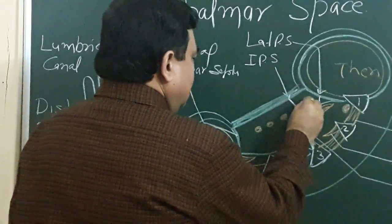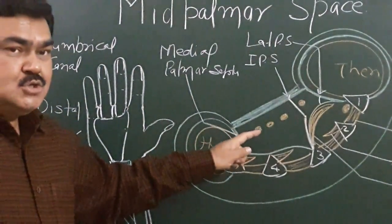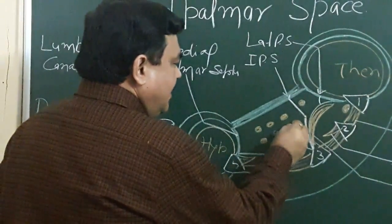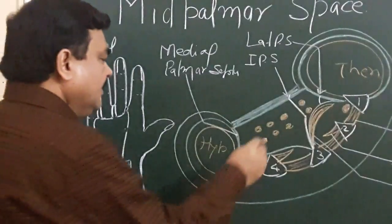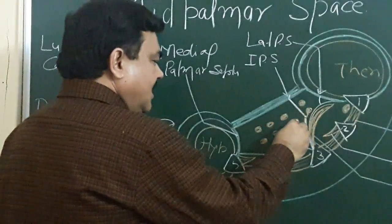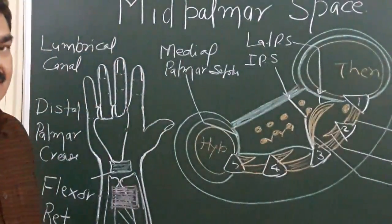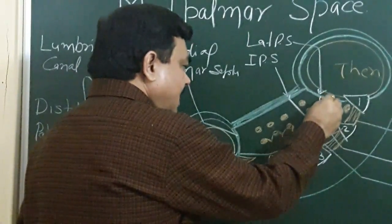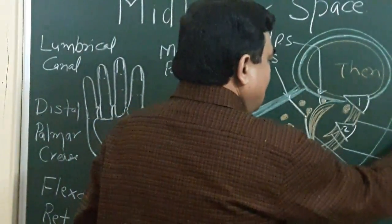Here are the flexor digitorum superficialis tendons and flexor digitorum profundus tendons. The flexor digitorum profundus tendons give origin to the lumbrical muscles. Here also is the position of the flexor pollicis longus tendon.